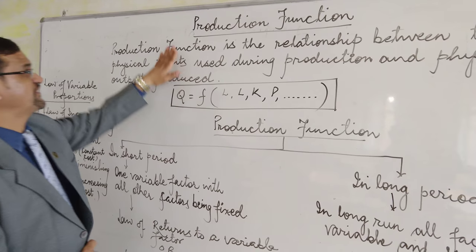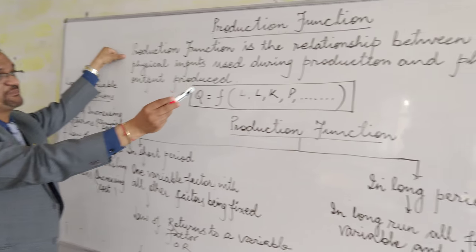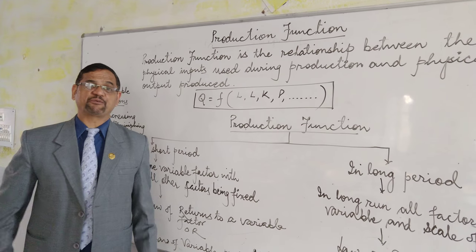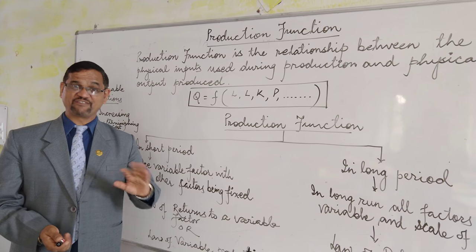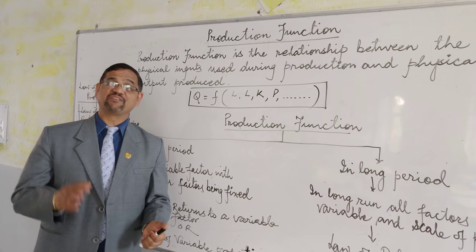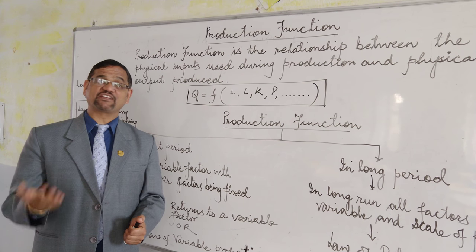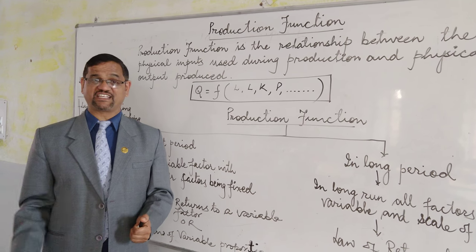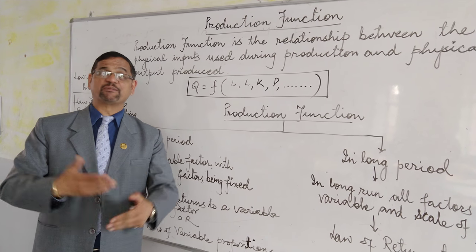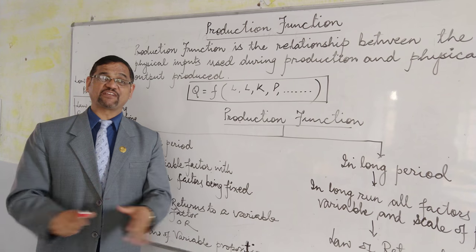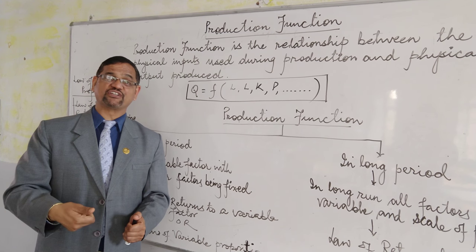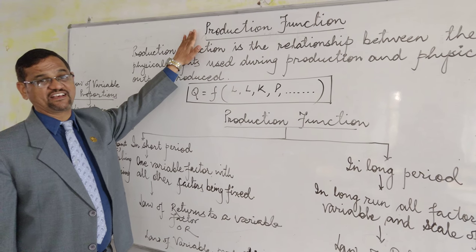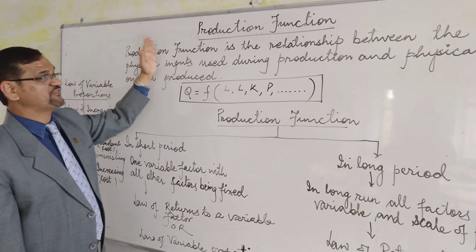What is production function? It is the relationship between the physical inputs used during production and the physical outputs produced. For example, suppose there are 5 people working in an ice cream factory producing 10 ice creams. If 5 more people come, it doesn't mean they will go from 10 to 20. It will not move in the same proportion — it may go from 10 to 25 or 30, moving with variable proportion.